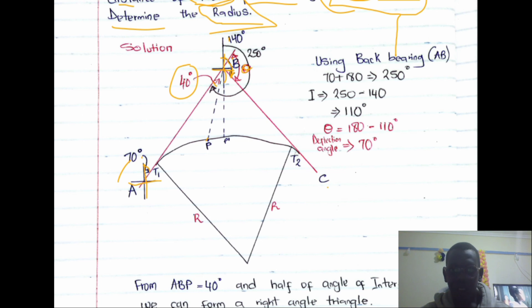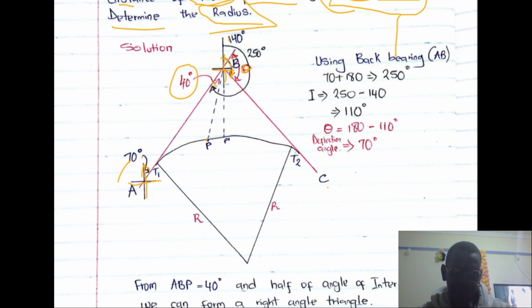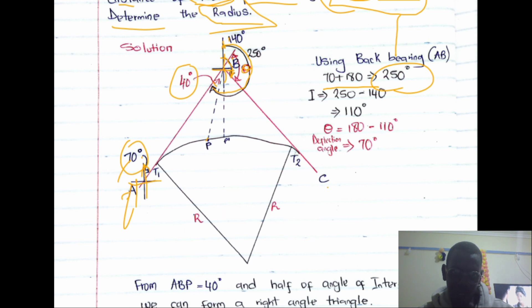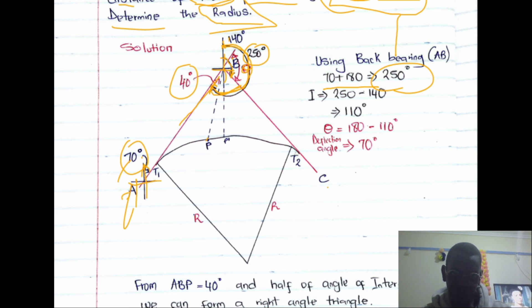Using back bearings: the difference between the back bearing and the forward bearing of a line is 180°. So the back bearing of line AB is 70° + 180° = 250°. However, the bearing covered back to this line on the diagram works out to 150°.